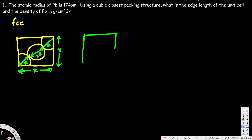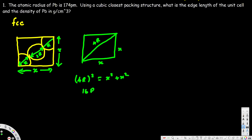So (4r)² = x² + x², which gives us 16r² = 2x², therefore x² = 8r², and therefore x = √(8) · r. This is the equation for the edge length of a face-centered cubic structure in terms of atomic radius r.